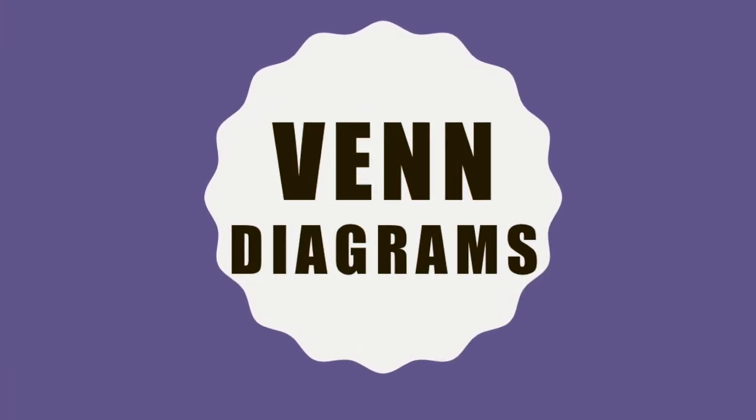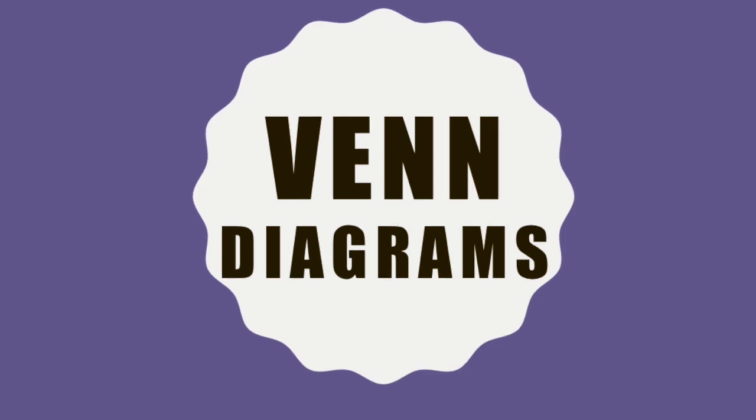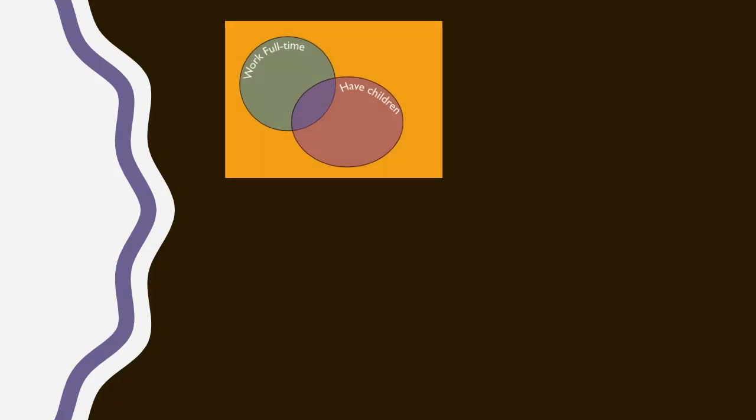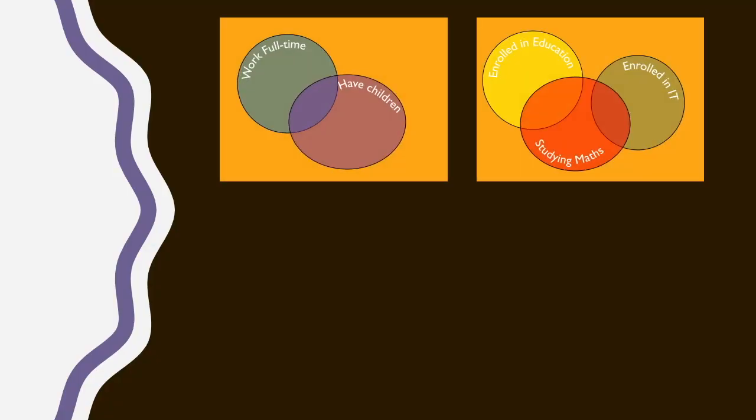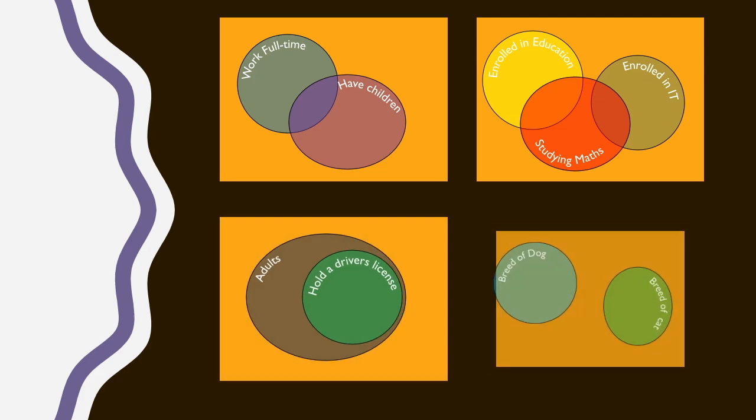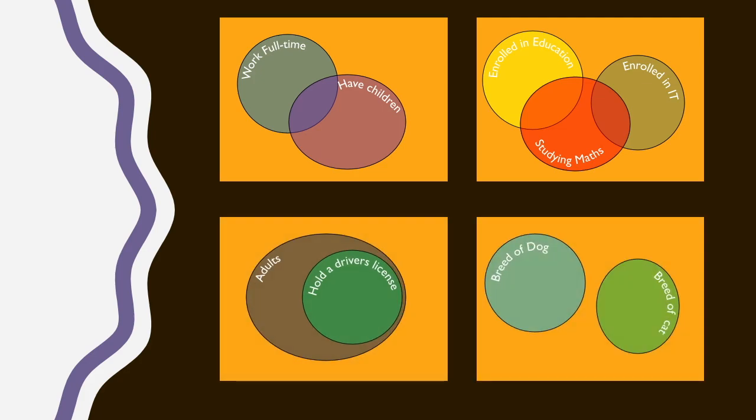In addition to tree diagrams, another useful tool we can use for helping us work with probabilities is Venn diagrams. We can use Venn diagrams to graphically signify the relationships between sets.